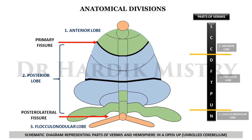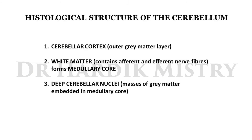In terms of vermis divisions: lingula, central lobule, and culmen belong to the anterior lobe; declive, folium, tuber, pyramids, and uvula belong to the posterior lobe; and the nodule is considered part of the flocculonodular lobe.